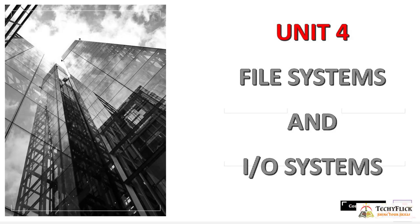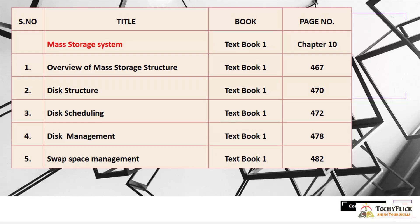Unit 4 covers File Systems and Input Output Systems. The first subtopic is Mass Storage System, Chapter 10. Topics include: Overview of Mass Storage System at page 467, Disk Structure Scheduling and Management at pages 470 and 478, and Swap Space Management at page 482.